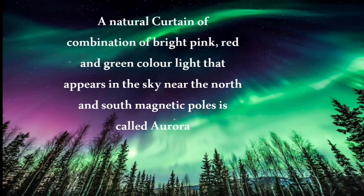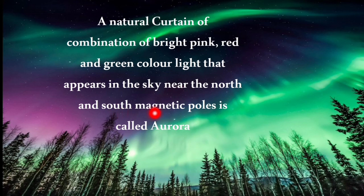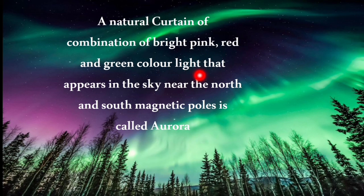Aurora is a natural curtain of bright pink, red and green colored light that appears in the sky near the north and south magnetic poles, visible in Antarctica.